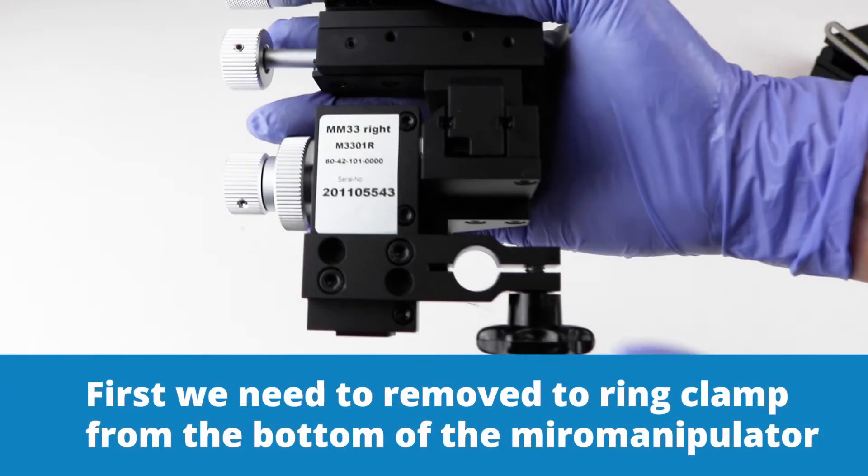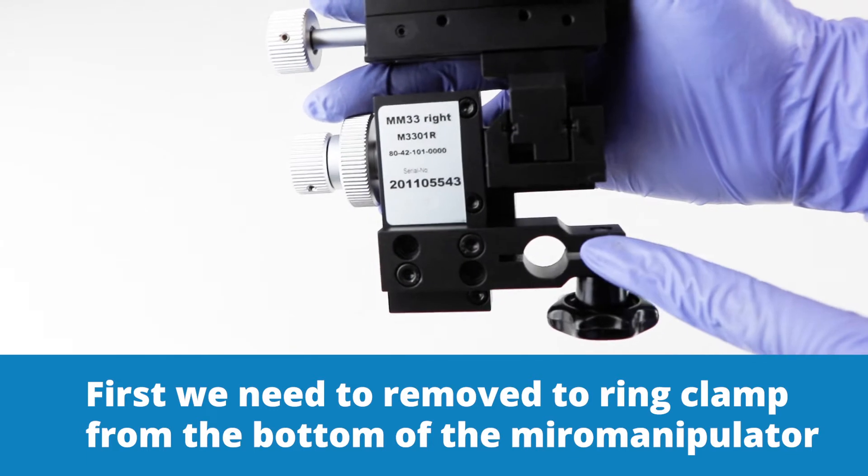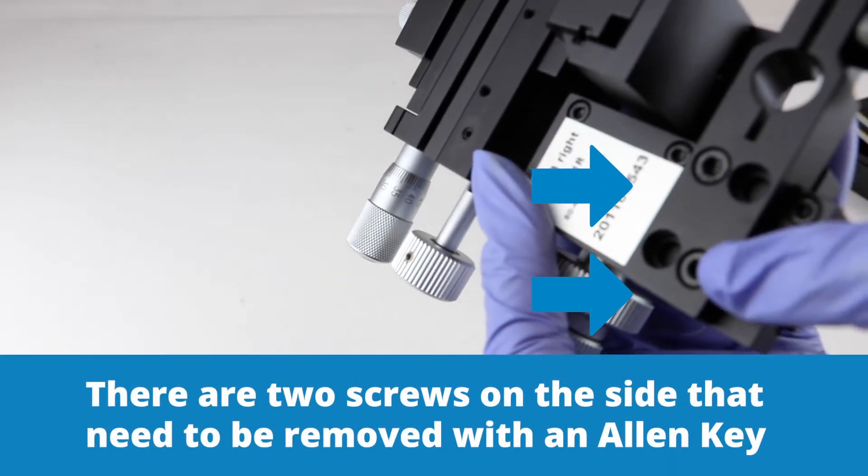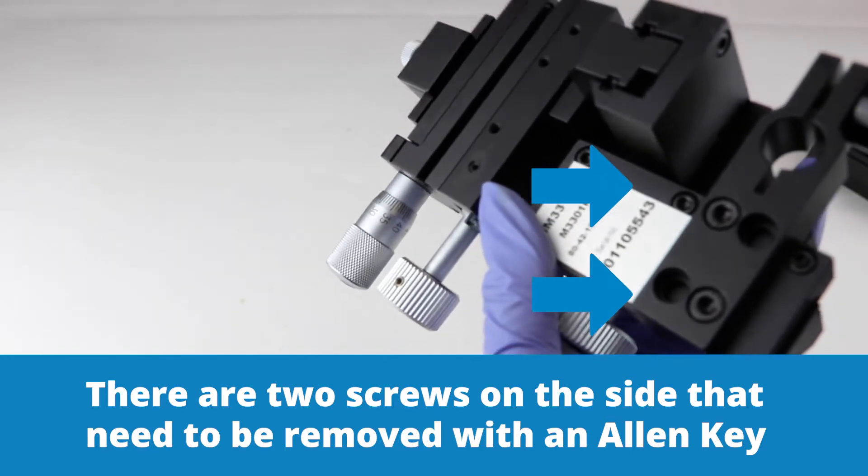The first thing we need to do is remove this ring clamp on the bottom of the micromanipulator. There are two screws that we need to remove with an allen key.